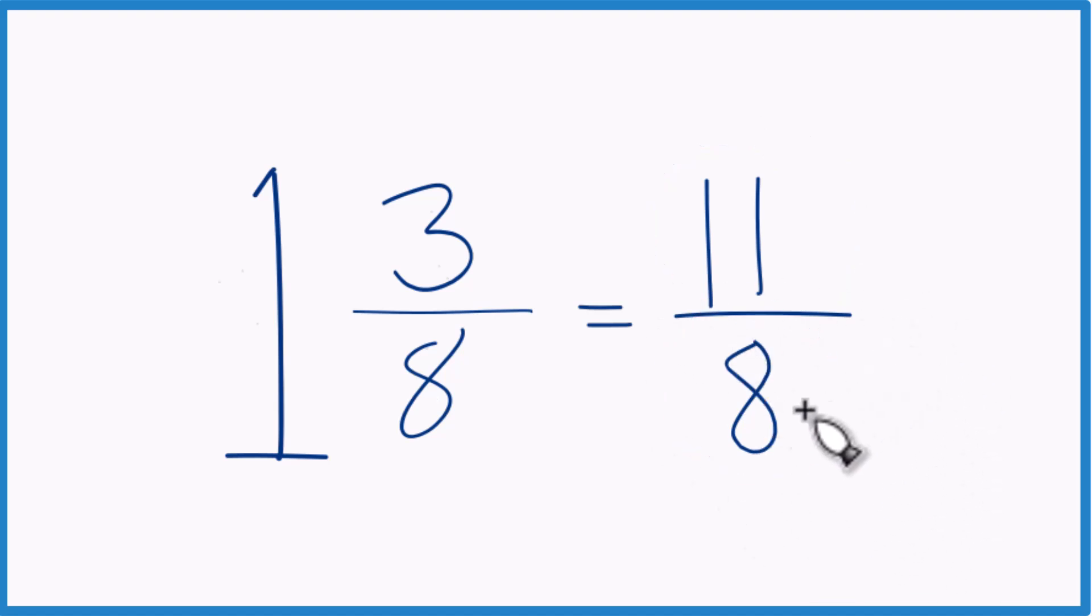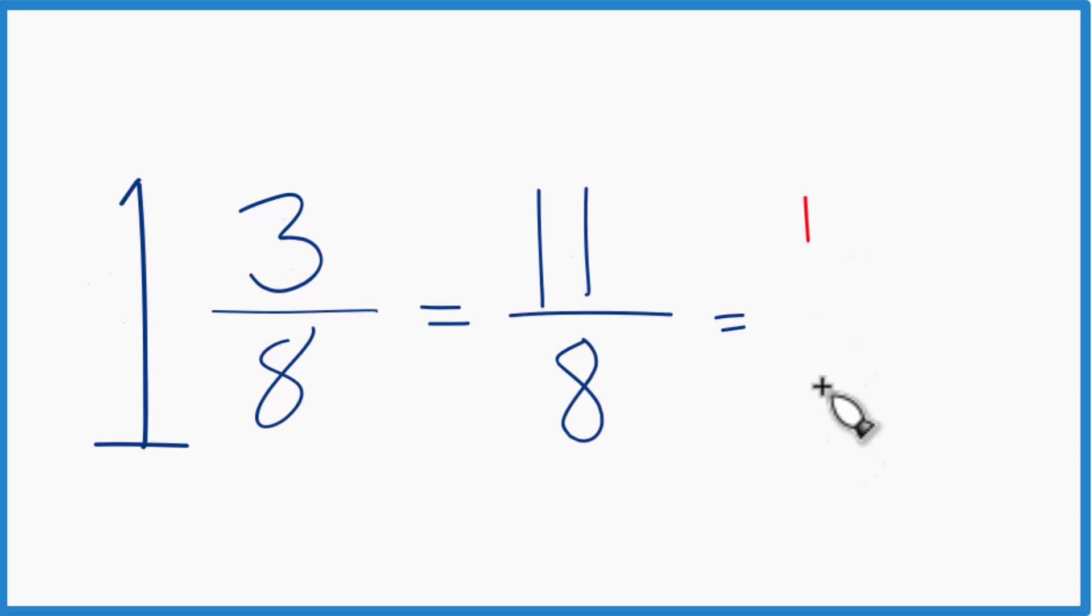And you can check your work too, because 8 goes into 11 one time with 3 left over. Bring the 8 across, 1 and 3 eighths. And that's what we started with.